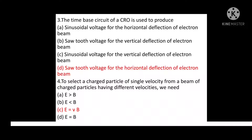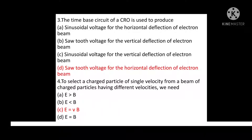Question No. 4: To select a charged particle of single velocity from a beam of charged particles having different velocities, we need? Option A: E is greater than VB. Option B: E is less than VB. Option C: E equals to VB. Option D: E equals to B. Correct answer is Option C: E equals to VB.